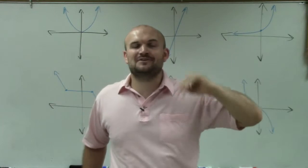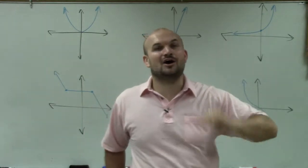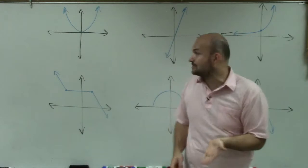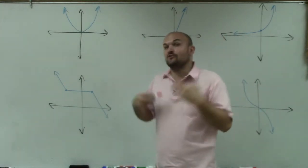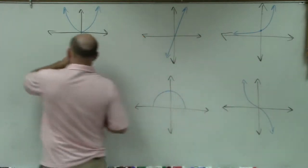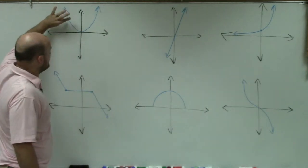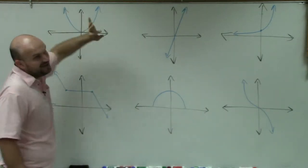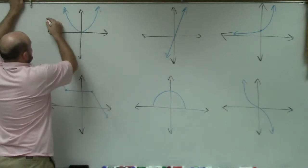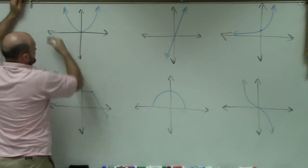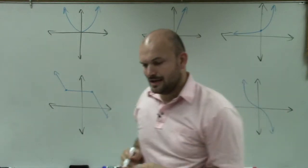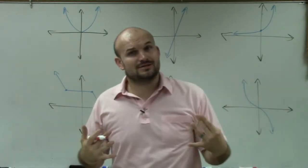Functions have an inverse if they are one-to-one. What we mean by one-to-one is they're going to have to pass the horizontal line test. That means for every output, you can only have one x value. The horizontal line test — not the vertical line test — is what we use here.